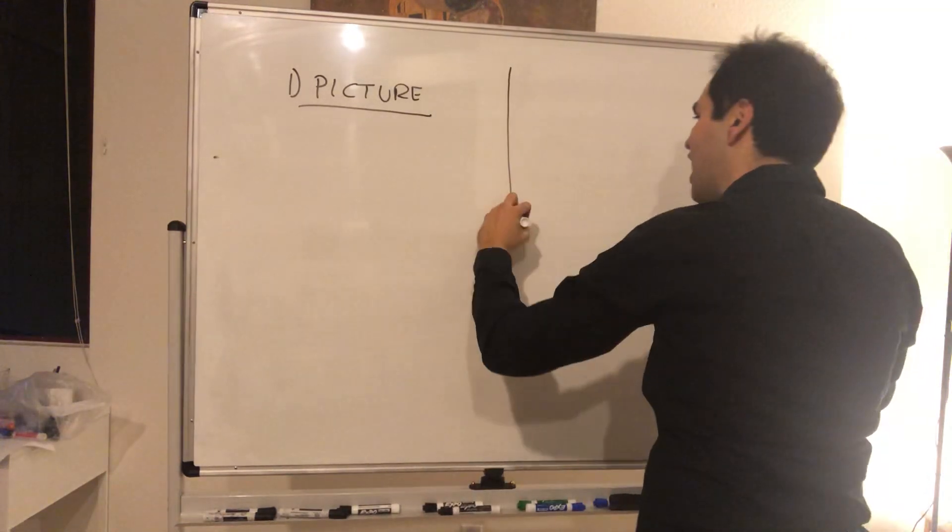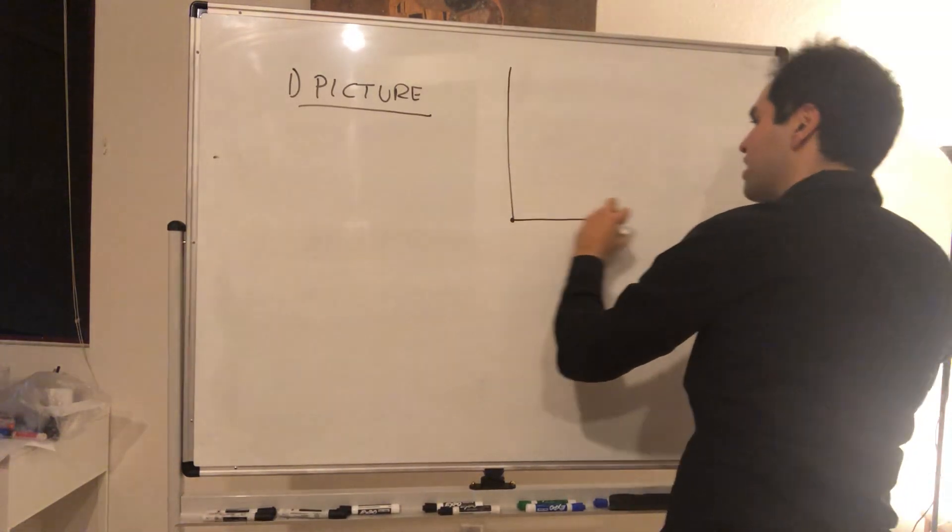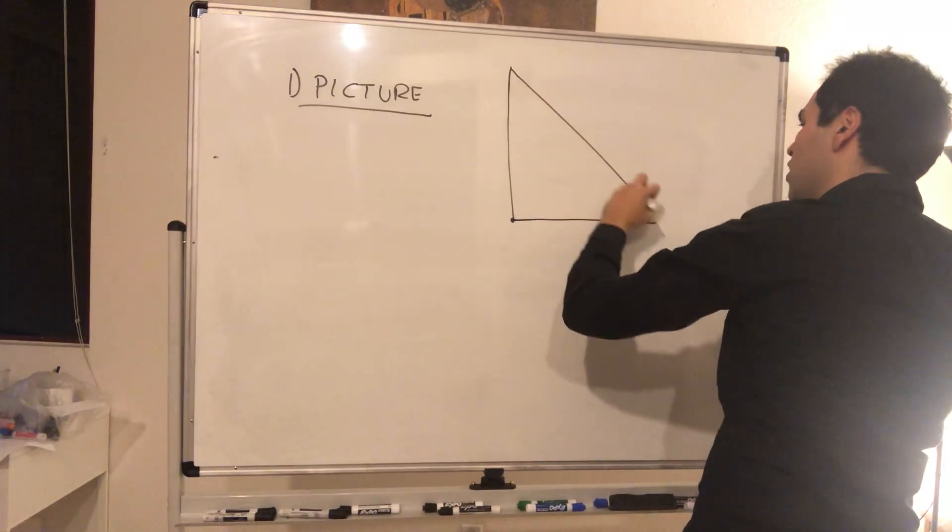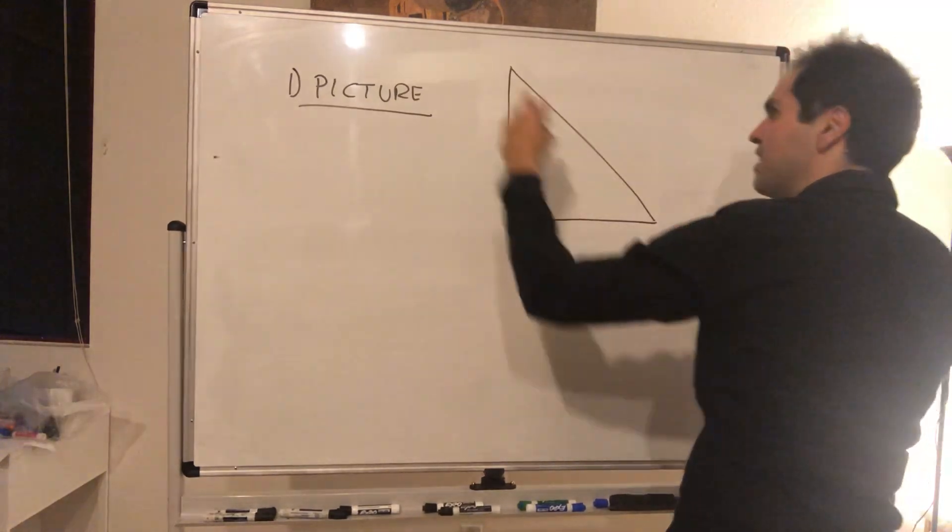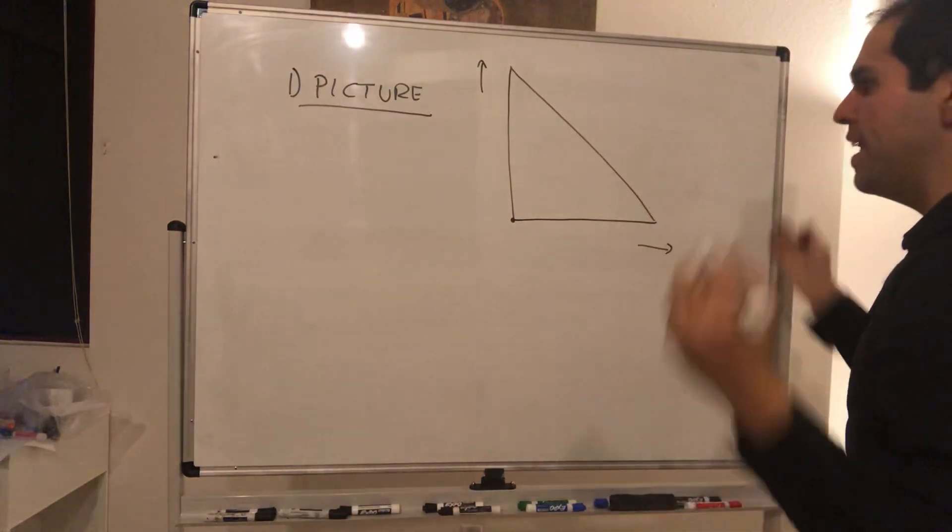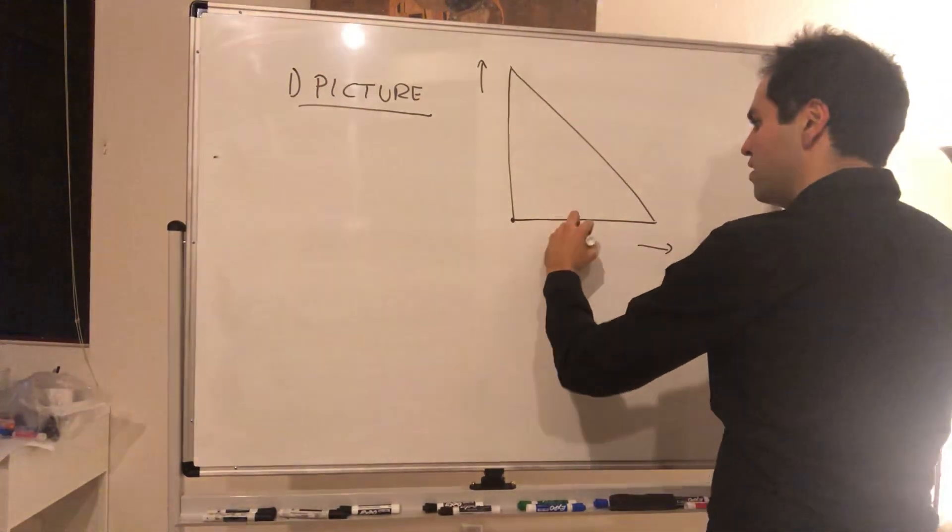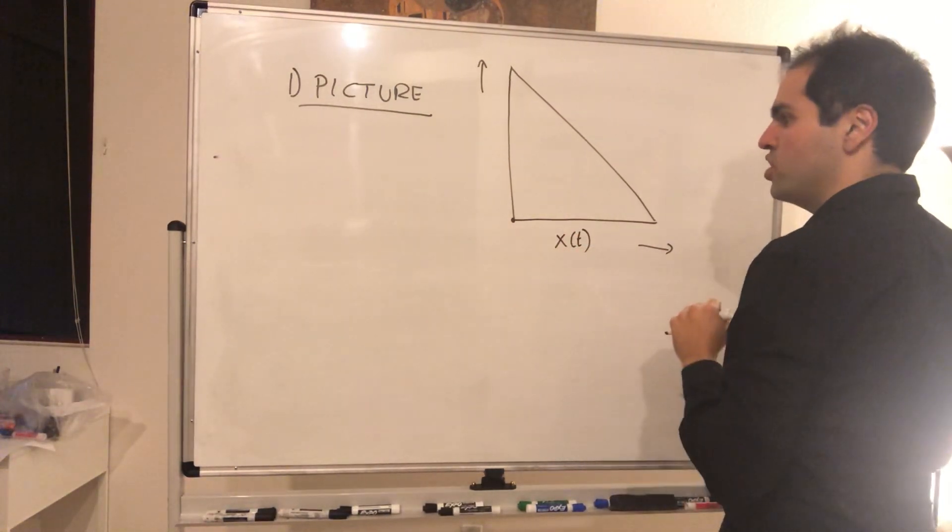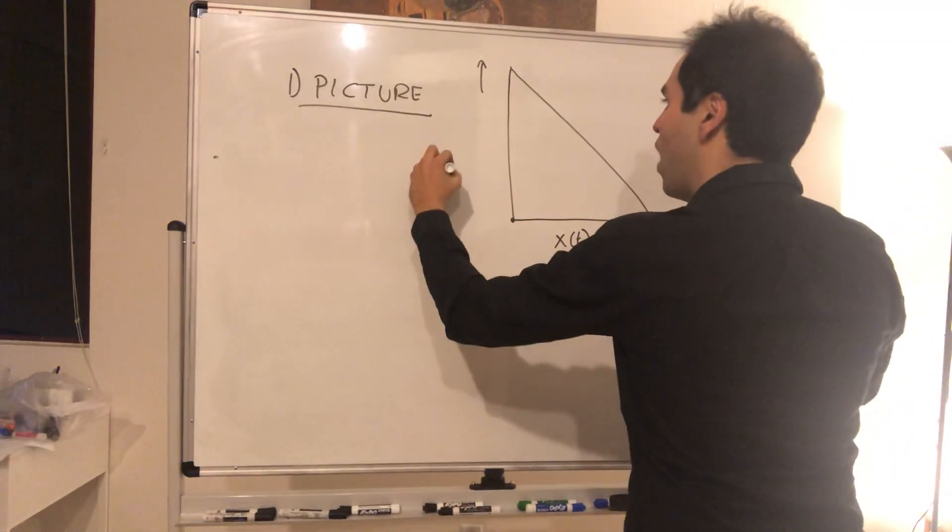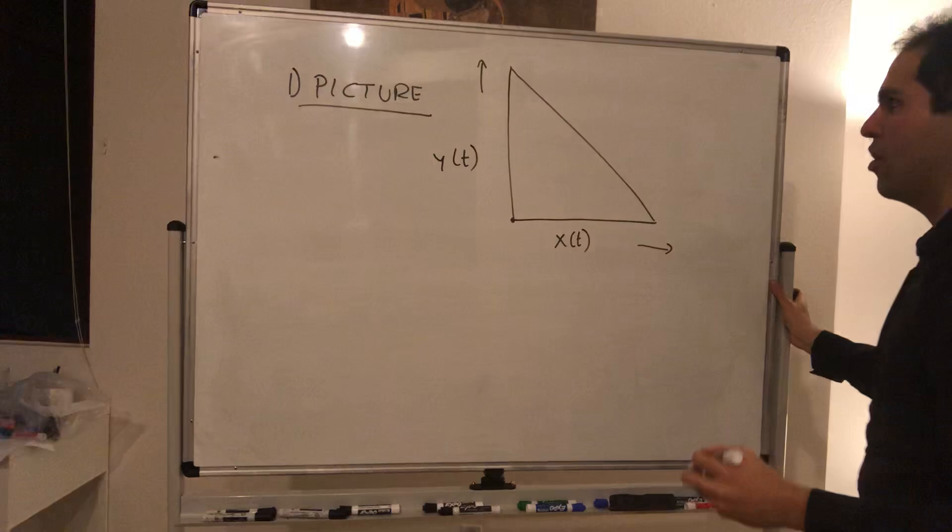So essentially what you have, two cars they start at the same point. One is going east and the other one is going north. So let x of t be the position of the first car and y of t be the position of the second car.